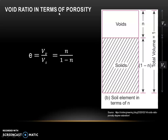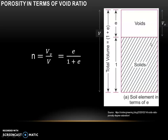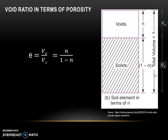Next is void ratio in terms of porosity. Here it is assumed that the total volume is equal to 1, whereas in the previous case it was assumed that the volume of solids is equal to 1. So total volume equals 1, volume of voids is represented by N, and volume of solids is equal to 1 minus N. Using the formula for void ratio, E equals VV divided by Vs; with reference to this figure, VV becomes N and Vs becomes 1 minus N.